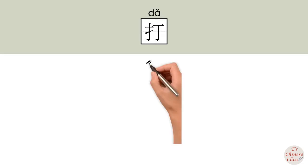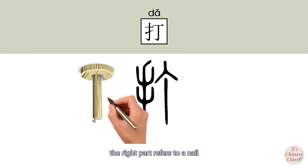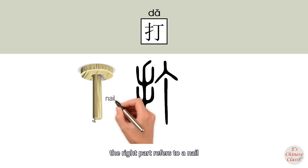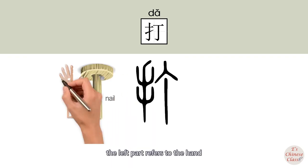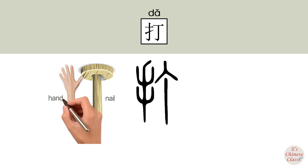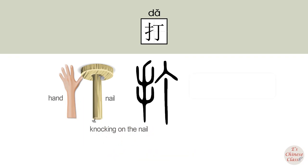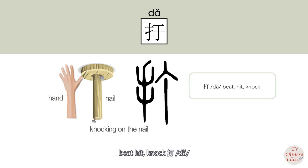In Asian, 打 was written as — the right part refers to a nail, and the left part refers to a hand which is knocking on the nail. So 打 means beat, hit, knock.